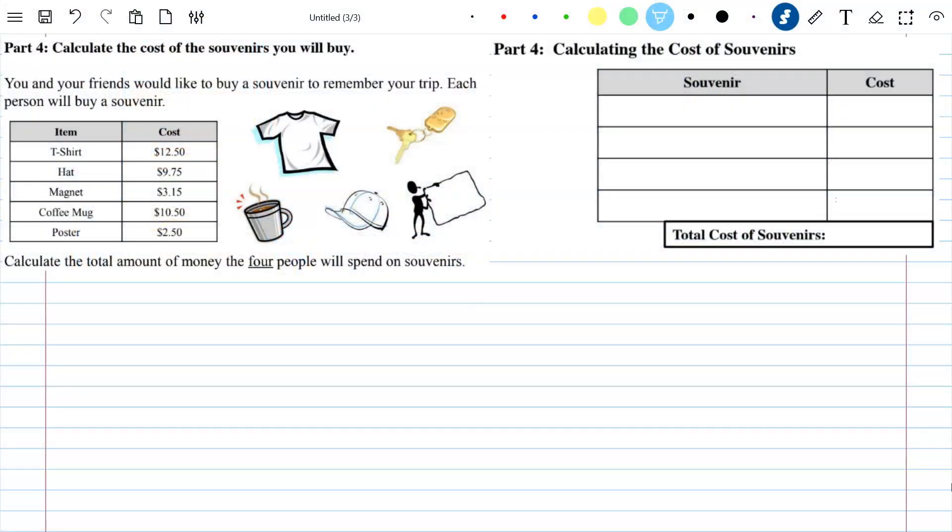So let's go ahead and read part four here. Calculate the cost of the souvenirs you will buy. So you and your friends would like to buy a souvenir to remember your trip. Each person will buy a souvenir, and at the end calculate the total amount of money the four people will spend on souvenirs.